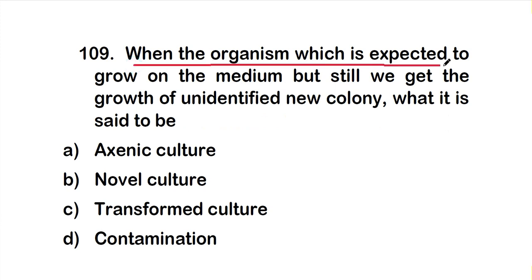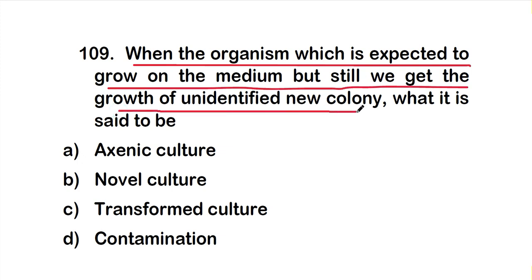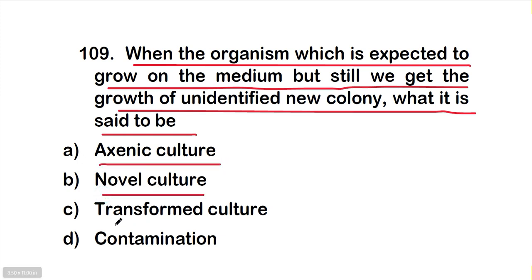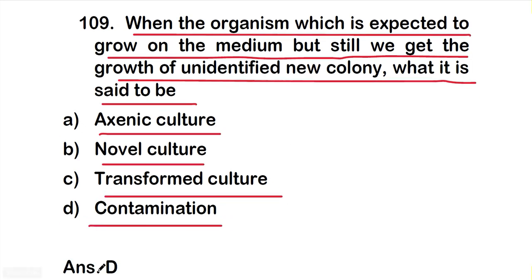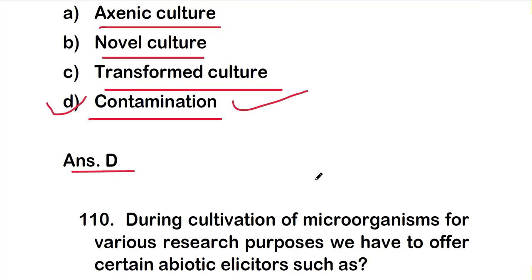Question 109: When the organism which is expected to grow on the media does so, but we still get the growth of an unidentified new colony, what is it said to be? Option A, an axenic culture; option B, novel culture; option C, transformed culture; or option D, contamination. The right answer is option D, contamination.